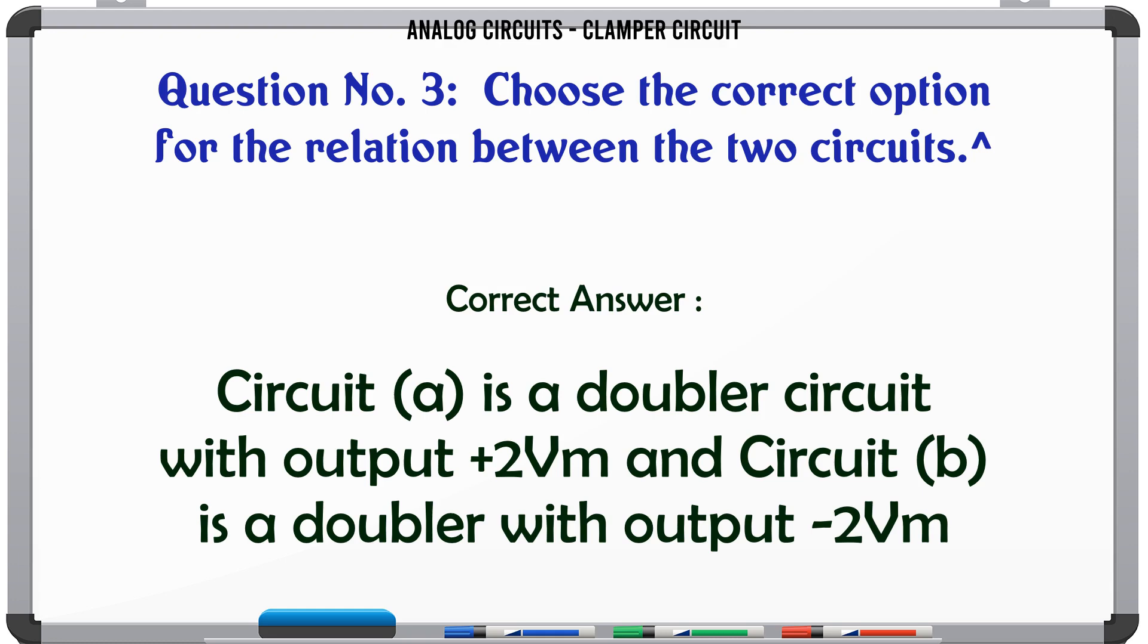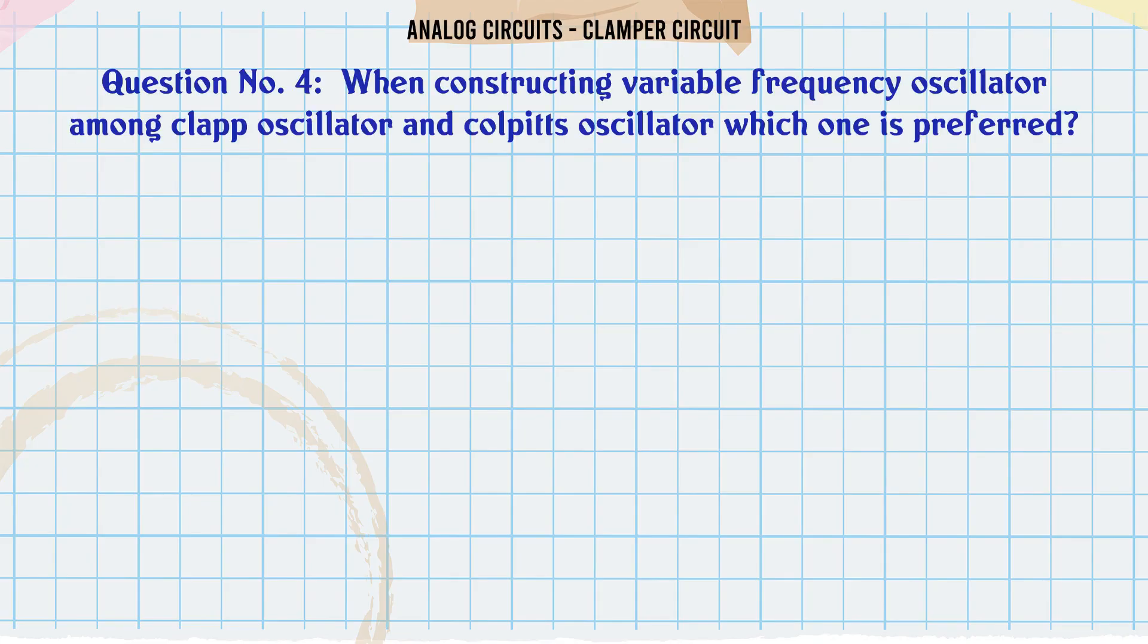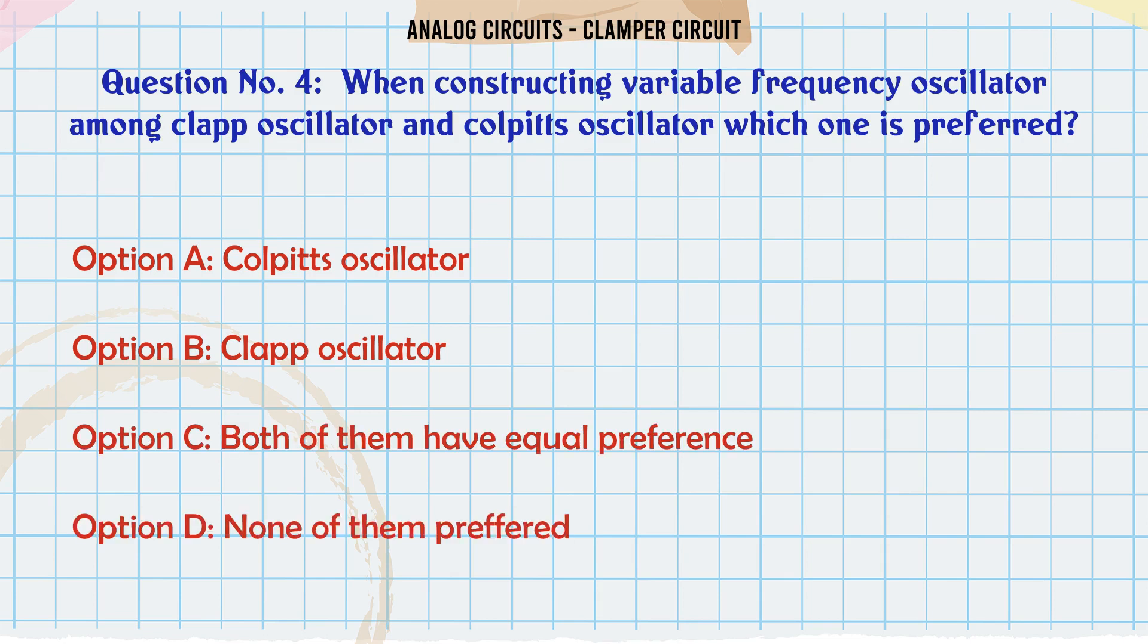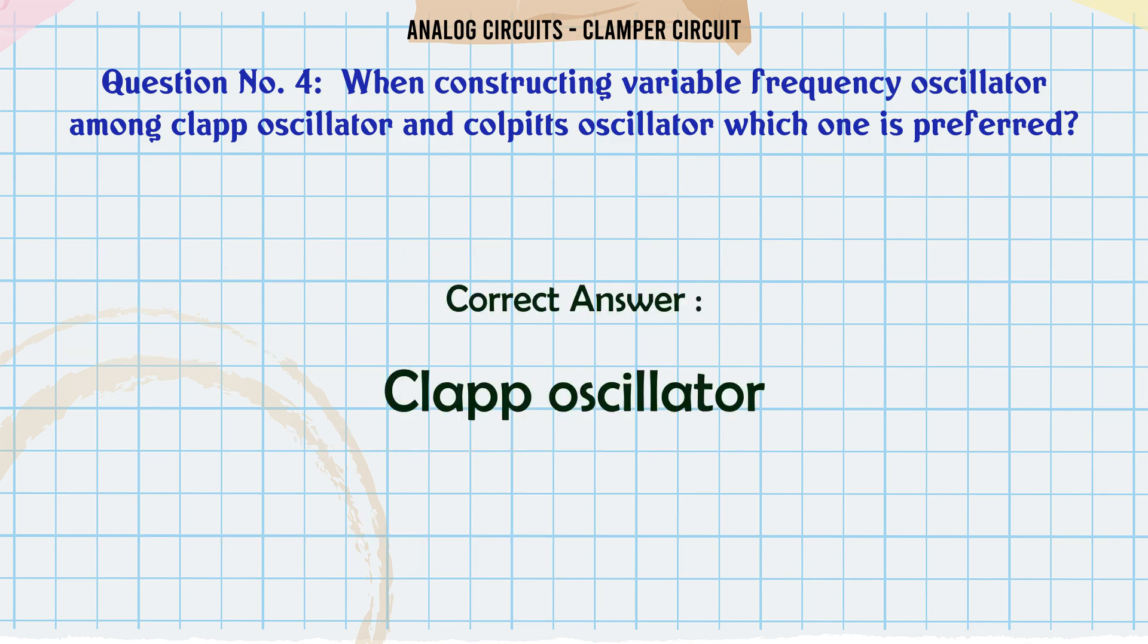When constructing variable frequency oscillator among clap oscillator and Colpitts oscillator, which one is preferred? A: Colpitts oscillator, B: Clap oscillator, C: Both of them have equal preference, D: None of them preferred. The correct answer is clap oscillator.